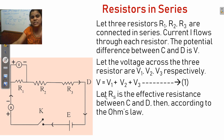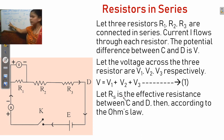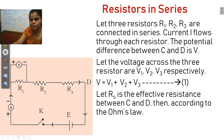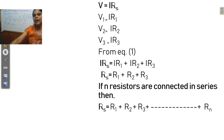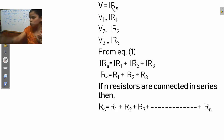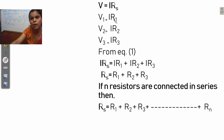Now, R1, R2, and R3 are connected in series and let the effective resistance be R. By Ohm's law, V equals IR. Since the same current I flows throughout, we can write: V equals IR for the whole circuit, V1 equals IR1, V2 equals IR2, and V3 equals IR3.